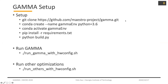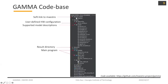For the setup, you'll clone from this repo, then create a virtual environment if you want, and install the requirements and dependencies. You can run Gamma with this command, and other optimizations with this one. In the Gamma codebase, you can see this directory structure. The cost model is a soft link to Maestro, the hardware configuration is the user-defined hardware configuration, the model directory contains the supported models, and the output directory is the result directory. We have Gamma and optimization under the source directory.